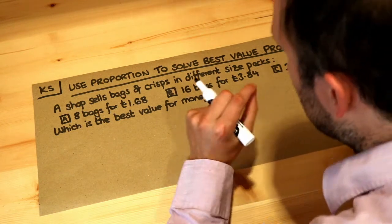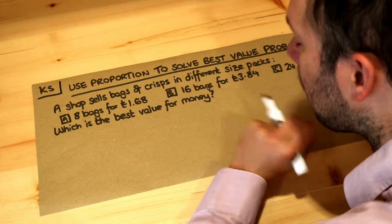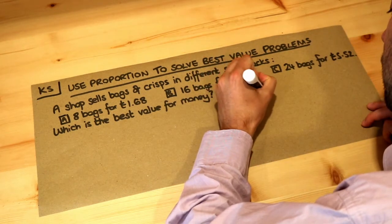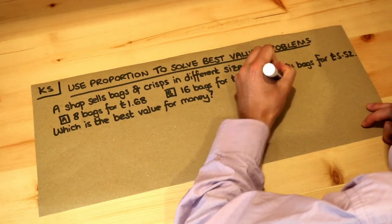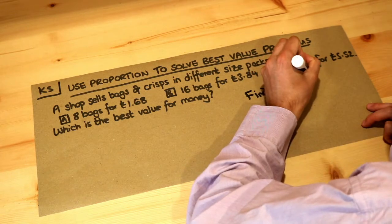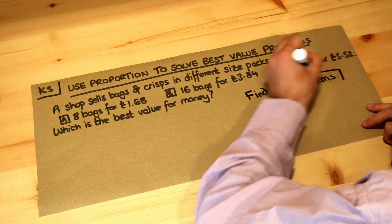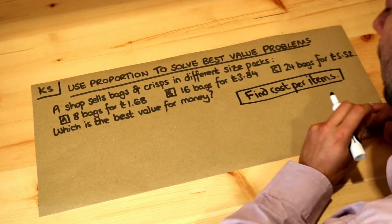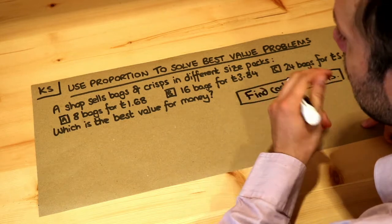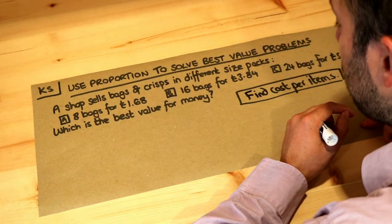The best way we can measure value for money is to see what the cost per item is, so we need to find the cost per packet of crisps — that's all we need to do. Clearly if the cost per item is less, so each packet of crisps costs a small amount, then that's going to be better than if each packet of crisps is more expensive.